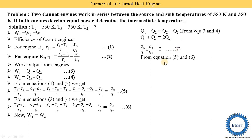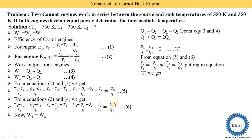In equation seven, we substitute the temperature relations from equations five and six: Q2 upon Q1 = T2 upon T1 means Q1 upon Q2 = T1 upon T2, and Q3 upon Q2 = T3 upon T2. Substituting these into equation seven and simplifying, we get T2 squared = T1 plus T3 upon two, which gives T2 = the square root of (T1 + T3) divided by two. Wait — rearranging gives T2 = (T1 + T3) / 2.